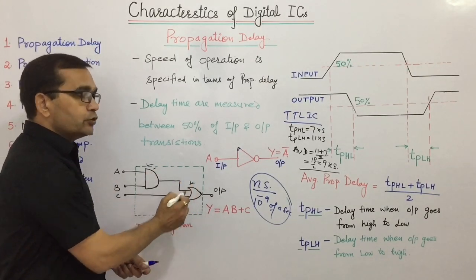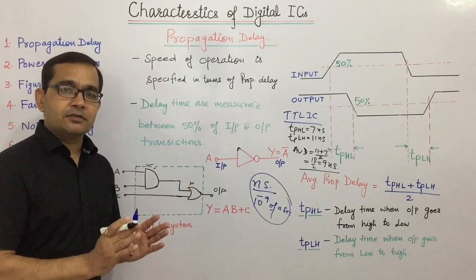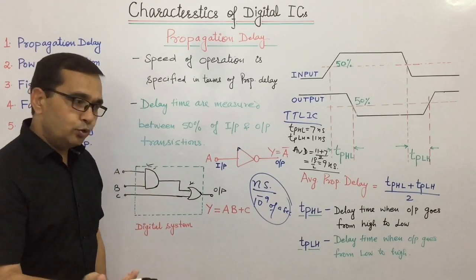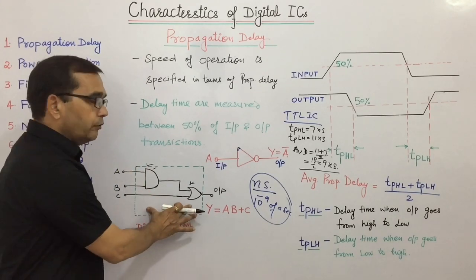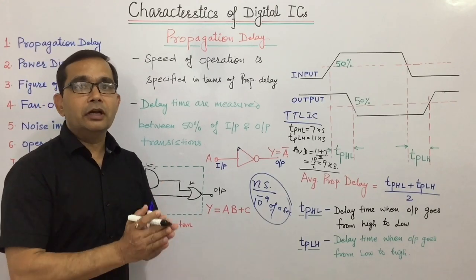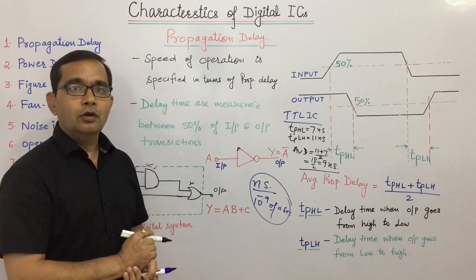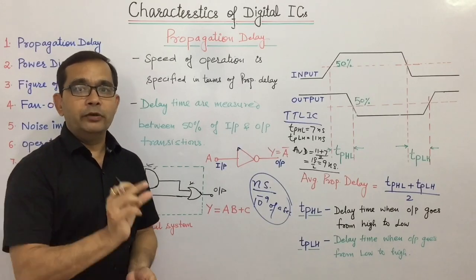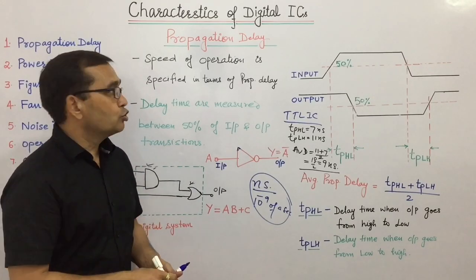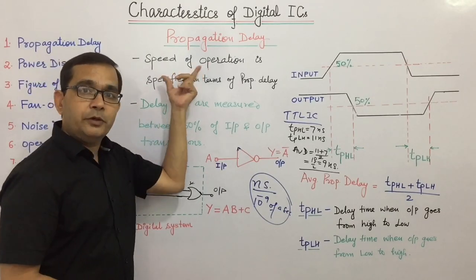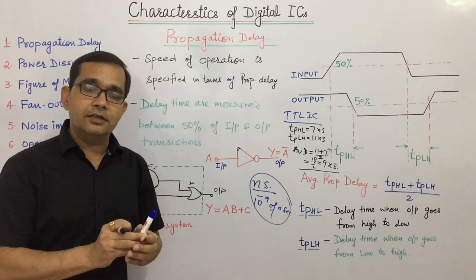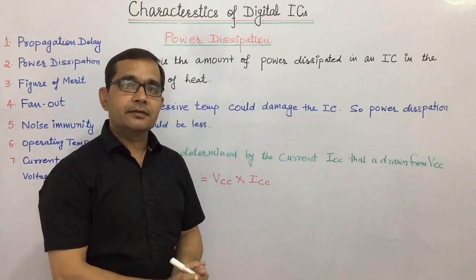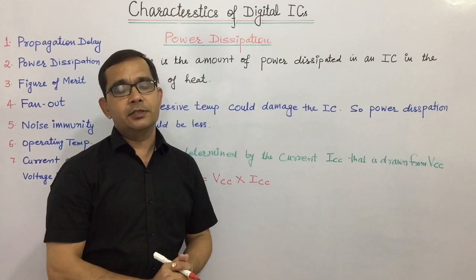The gates used in a digital system should have smaller propagation delays, and we should use fewer gates so that the total propagation delay of the digital system is smaller. A smaller propagation delay means the speed of operation of an IC is much greater. The second parameter, the second characteristic, is power dissipation.